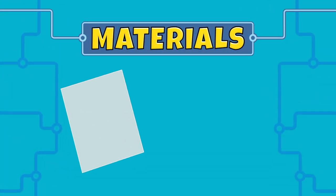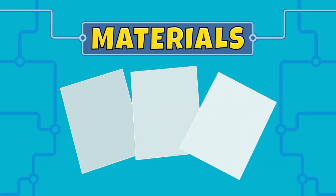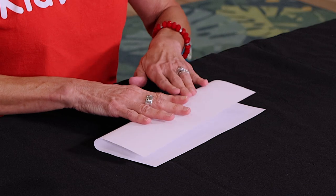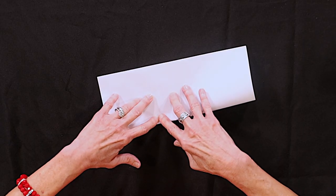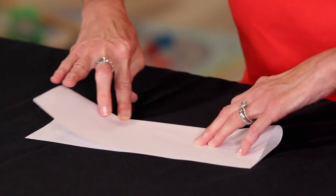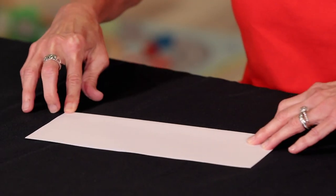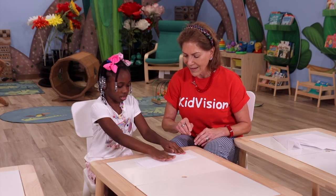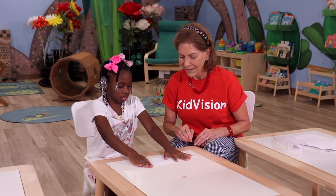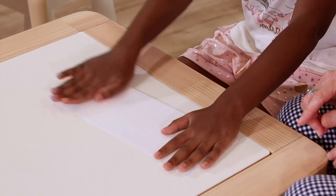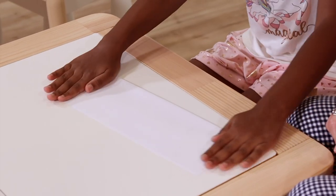We will need some sheets of copy paper. First, you fold the paper in half, and it's very important that you crease the paper — a nice, hard crease. Parents and teachers can help you with all the folding. We'll give you some instructions.